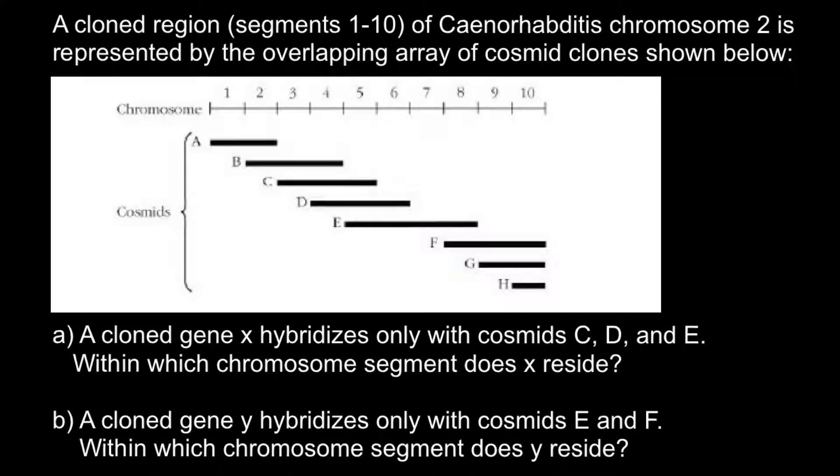Hello and welcome to Nikolai's genetics lessons. Today's problem is about a cloned region, segments 1 to 10, of Caenorhabditis chromosome number 2, represented by the overlapping array of cosmid clones shown below. Here are two questions.